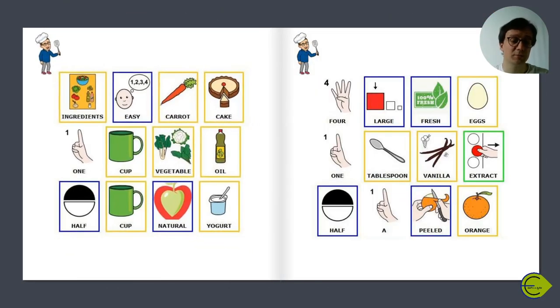Ingredients: 1 cup vegetable oil, 1.5 cup natural yogurt, 4 large fresh eggs, 1 tablespoon vanilla extract, 1.5 peeled orange.